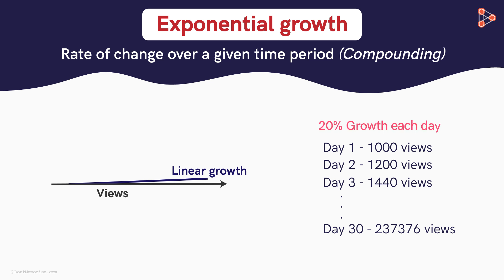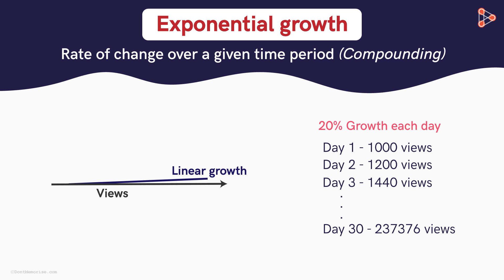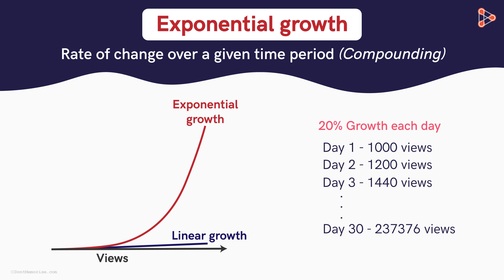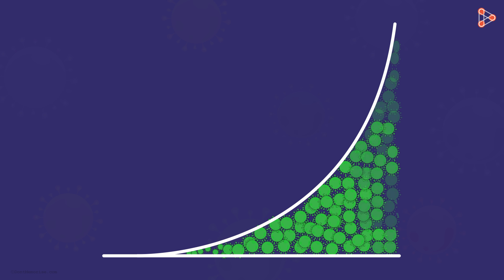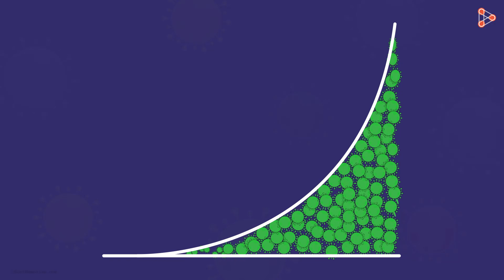For the same rate of growth, with passage of time, the growth seen for each time period increases immensely. That is the power of compounding. That is exponential growth. Viral infections spread in this manner, and hence anything which shows exponential growth is referred to as viral.